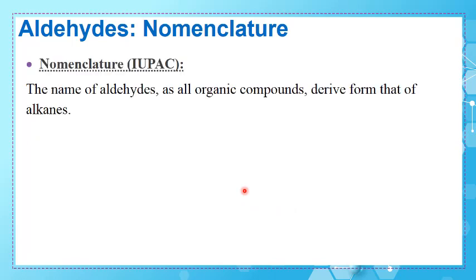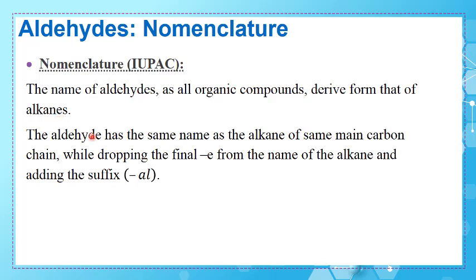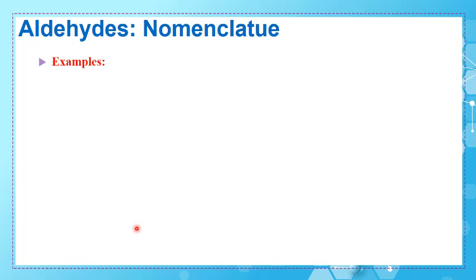Regarding nomenclature according to IUPAC, the name of aldehydes is derived from that of alkanes. We compare the carbon chain of the aldehyde with that of the alkane having the same main carbon chain, drop the final E from the alkane name, and replace it with AL. So the name of an aldehyde is simply alkanal — 'alka' changes with the chain length, while 'al' stays for all aldehydes.